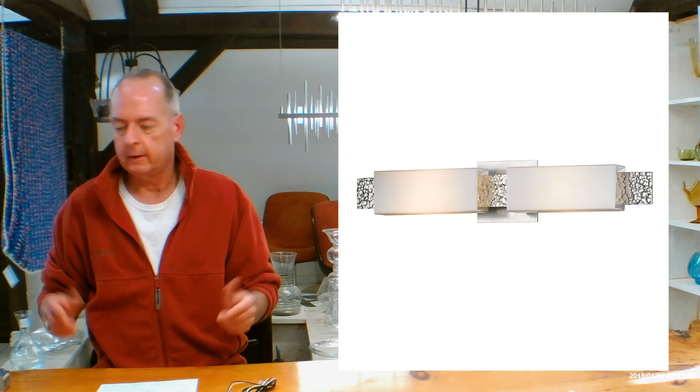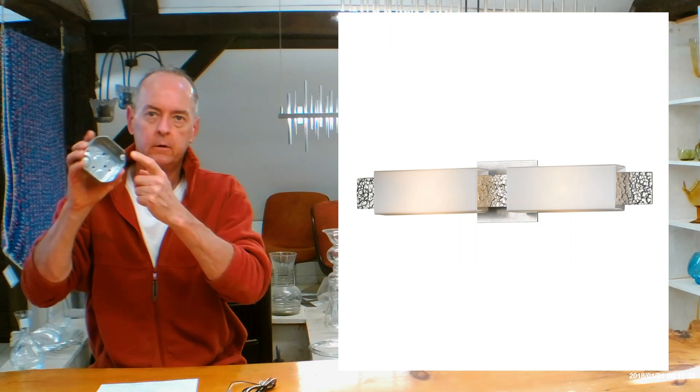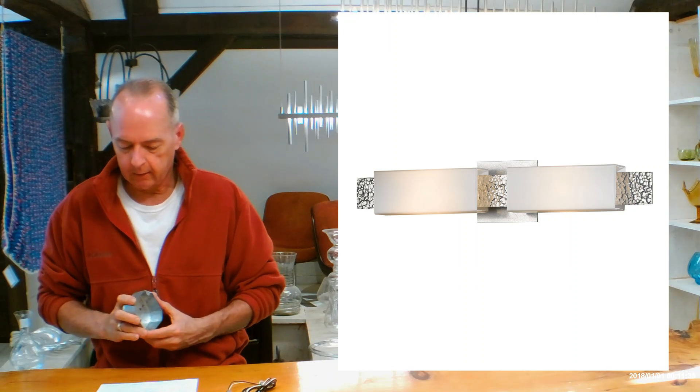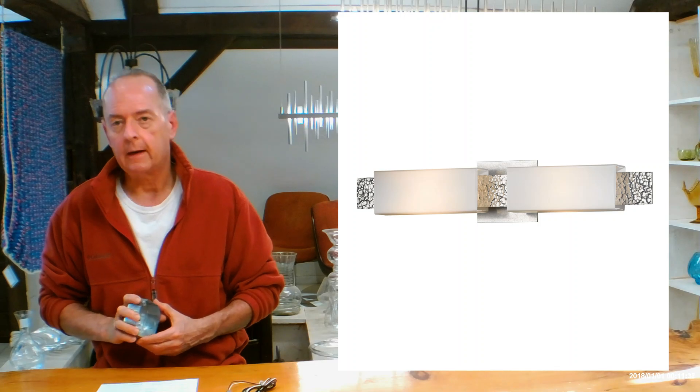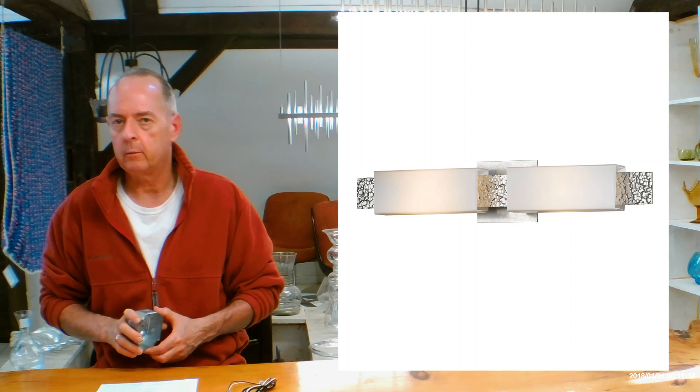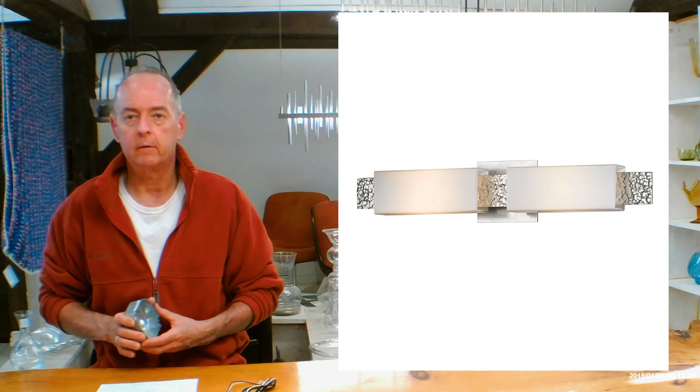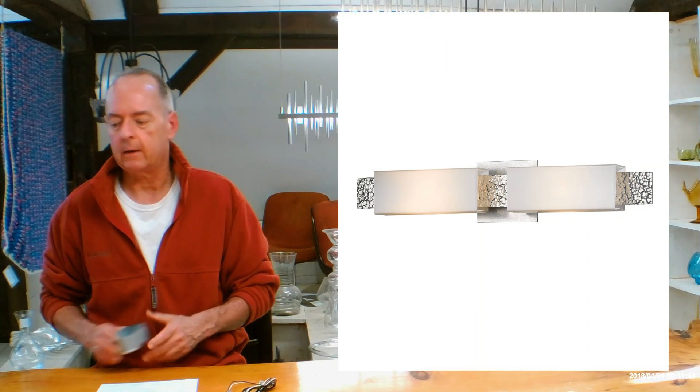Let's get into the mounting height on it and that's going to be, again, if you're going to be using this horizontally, 2.3 inches from the bottom of the fixture to the middle of your junction box like this. And the back plate on it is 4.6 by 19.1.